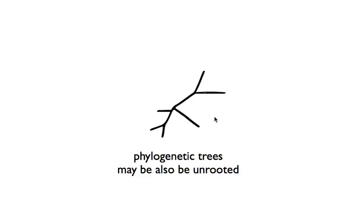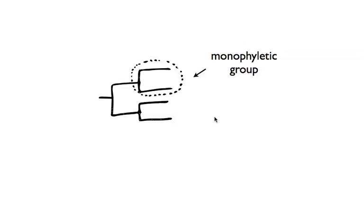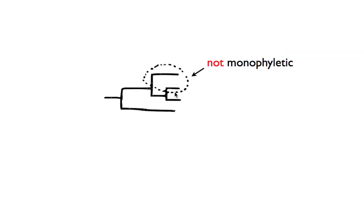Trees don't necessarily have to be rooted and you may also see unrooted trees. A monophyletic group is where all the species and microbes we look at all exclusively share the same common ancestor. This is also called a clade. This is not a monophyletic group because this tip here is not included from this descendant here, which is the common ancestor of these two. So this is not a monophyletic group.